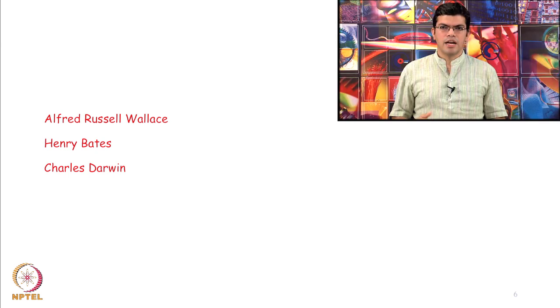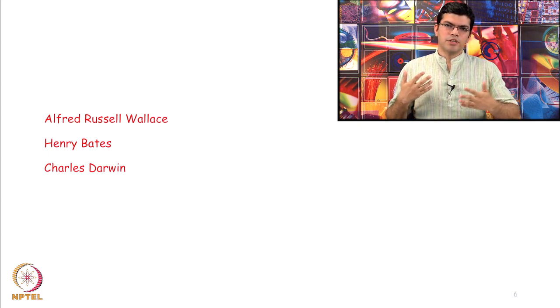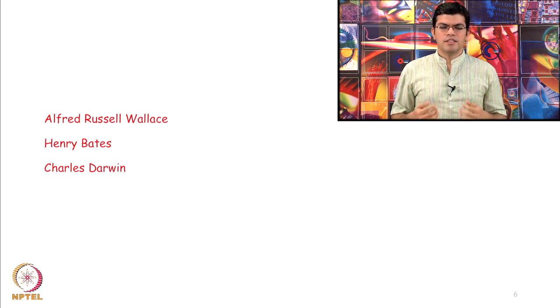Lamarck was wrong — that is not how species change from generation to generation. But where the significance of Lamarck's theory lies is in the fact that he was the first person to challenge the prevailing view that species are immutable and come up with the first concerted theory of evolution, done in 1809. Incidentally, 1809 was also the year when Charles Darwin was born. To understand the theory of evolution we will be talking about three people: Alfred Russel Wallace, Henry Bates, and Charles Darwin — all three were British naturalists interested in life.